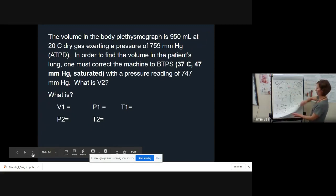We're going to use the same combined gas law. P1 V1 over T1 equals P2 V2 over T2. Now we're going to put in all of our variables so we don't get ourselves confused. We're going to solve for V2. The first one is V1 at 950 milliliters. P1 is 759 millimeters of mercury and we don't have to subtract anything because it's dry gas. There's no water vapor pressure. The temperature is 20 degrees Celsius. 20 plus 273 is 293 Kelvin.